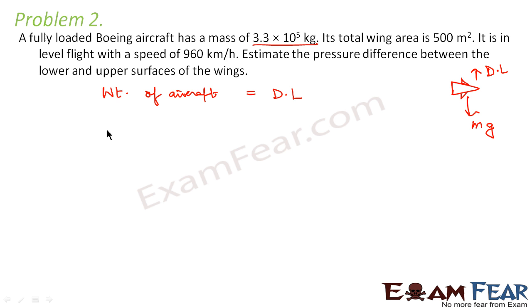Now weight of the aircraft is nothing but mg and what is dynamic lift? It is basically the upward force which is exerted due to pressure difference. So pressure difference is p1 minus p2 into area or we can write p1 minus p2 as delta p.